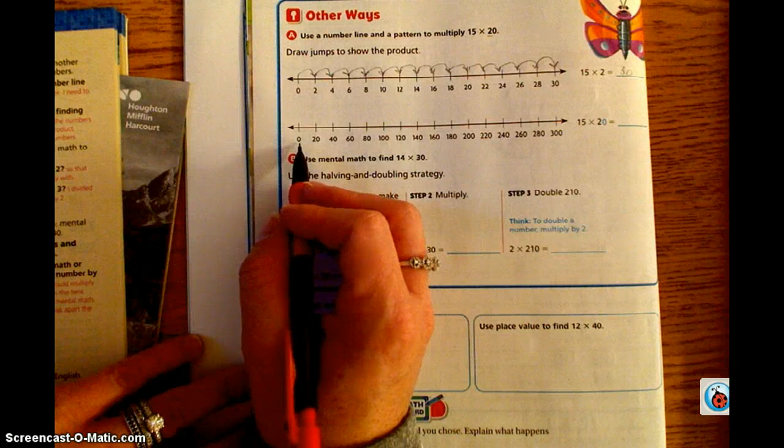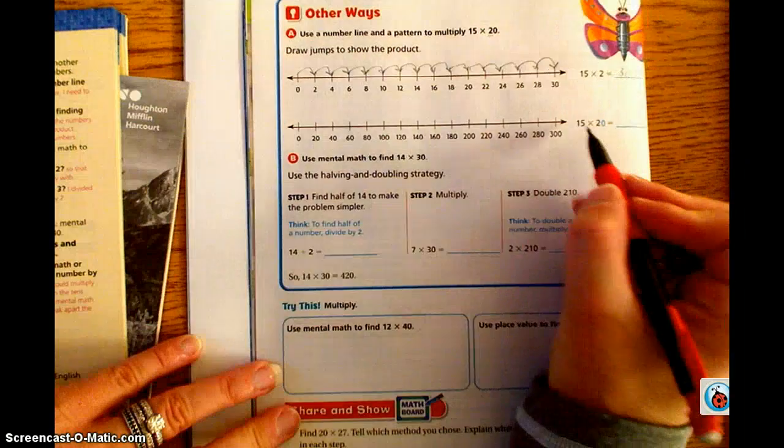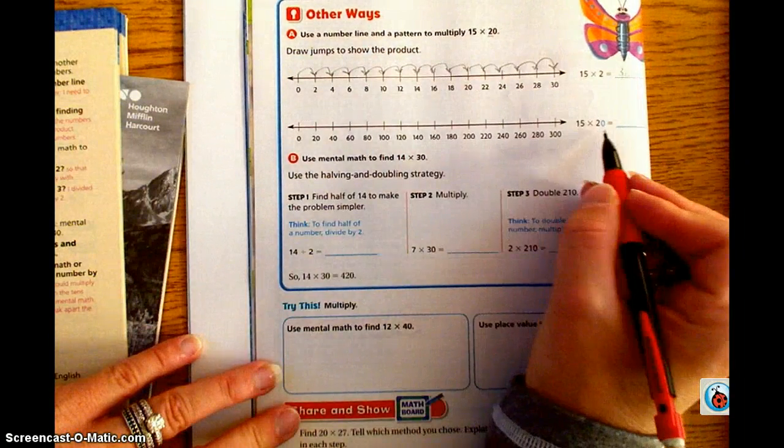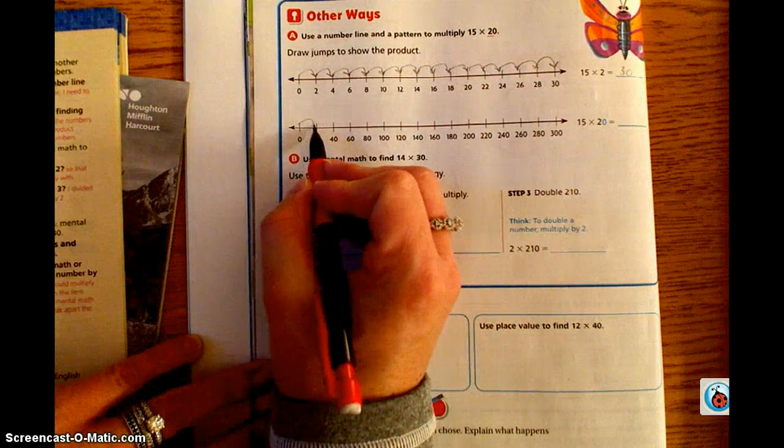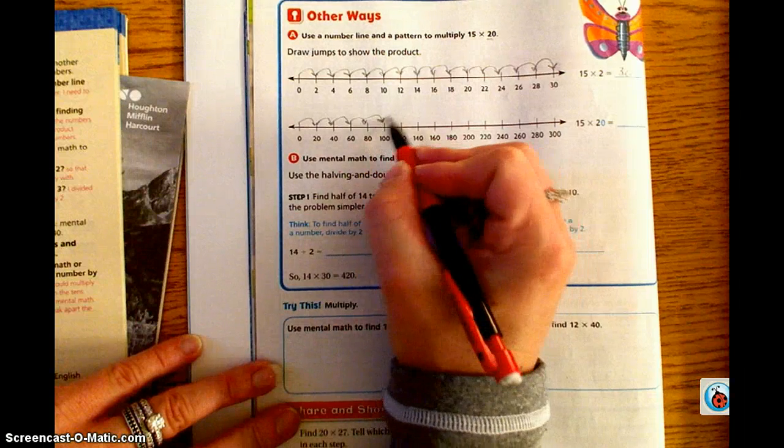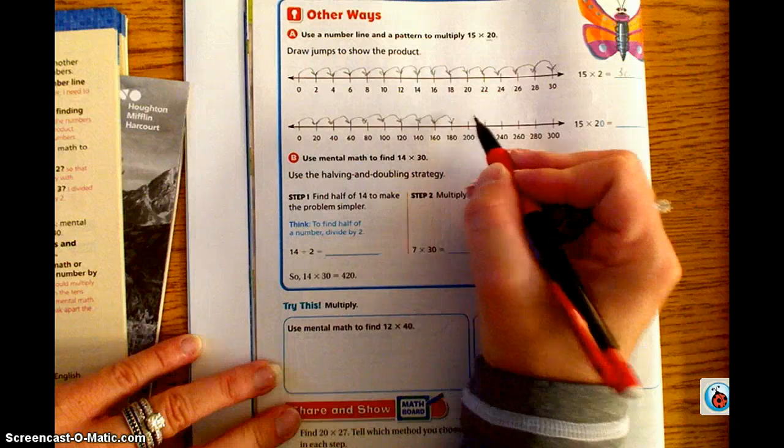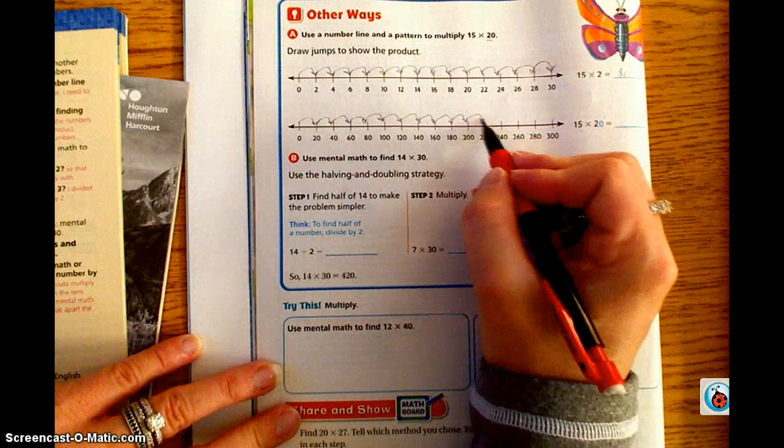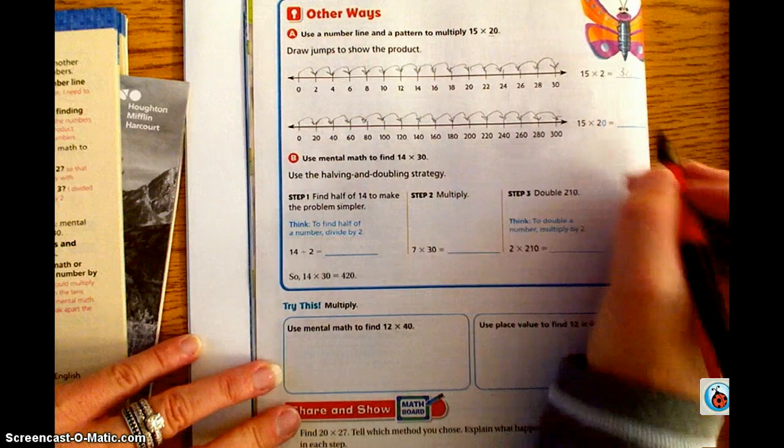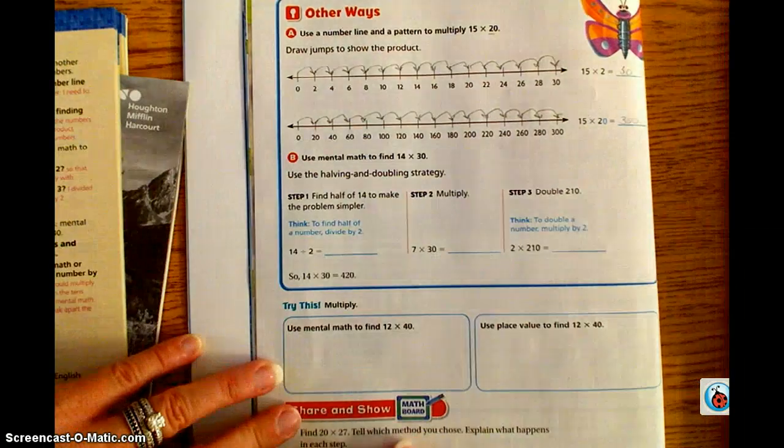This number line is a little bit different because it is going to skip count by 20s. So, 15 times 20 is our original problem. So we go 20, 40, 60, 80, 100, 120, 140, 160, 180, 200, 220, 240, 260, 280, 300. Telling us that 15 times 20 is 300.